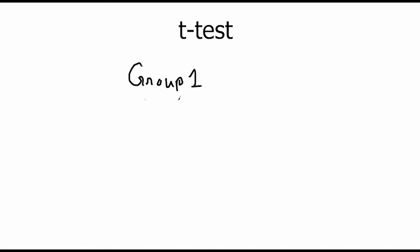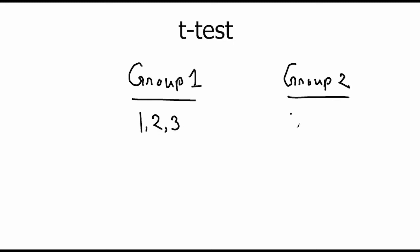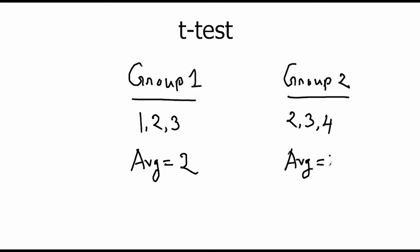The t-test compares the means between two groups of interest. If we have two groups — group one with samples one, two, and three, and group two with samples two, three, and four — the average of group one is simply adding up the samples and dividing by the total number. Group one has an average of two and group two has an average of three.